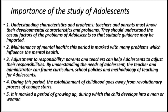Some important highlighting points of adolescence: first, understanding characteristics and problems — to deal effectively with adolescents, teachers and parents must know their developmental characteristics and problems, including causal factors, so they can provide suitable educational, vocational, and personal guidance for social adjustment. Second, maintenance of mental health — adolescence is marked by many problems which influence mental health; study of this period is important to preserve, cure, and prevent maladjustment. Third, adjusted to responsibilities — study of adolescent psychology provides knowledge of needs and developmental tasks. Teachers and administrators can frame curriculum, school policies, and teaching methodology appropriately for adolescents.